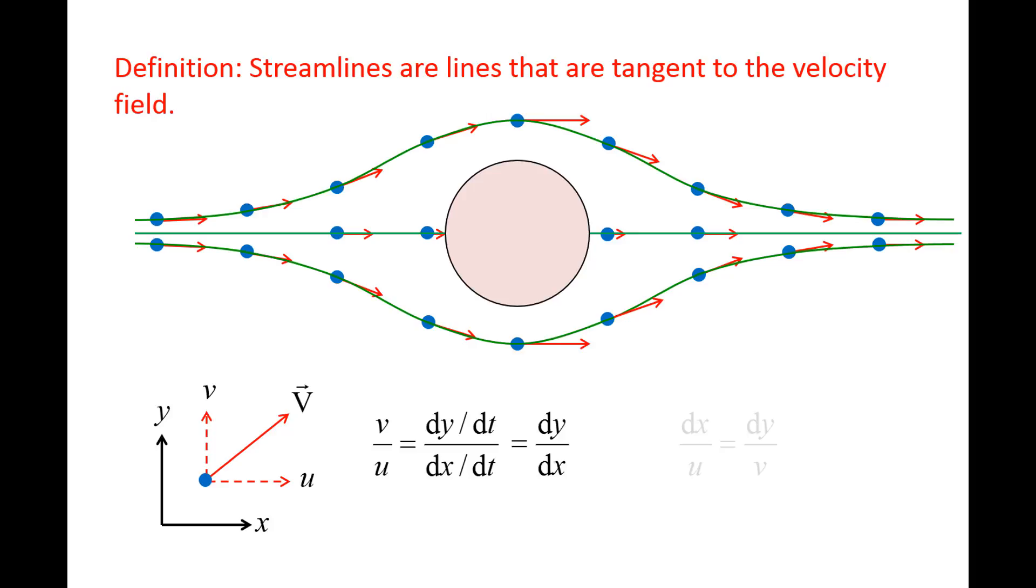Rearranging the equation, we obtain dx over u equals dy over v. Had we examined the z direction as well, we would find that these ratios also equal dz over the z component of the velocity, lowercase w. If we know the velocity components as functions of position and time, we could integrate this equation to find the streamline passing through a given point.